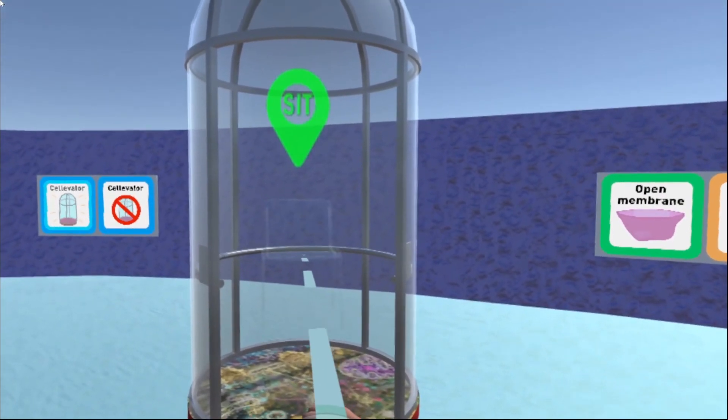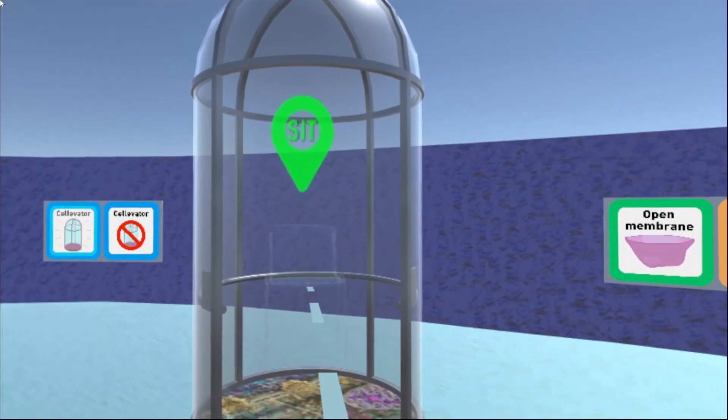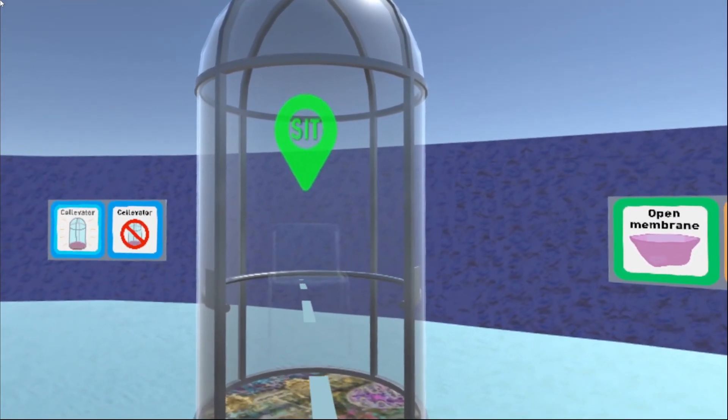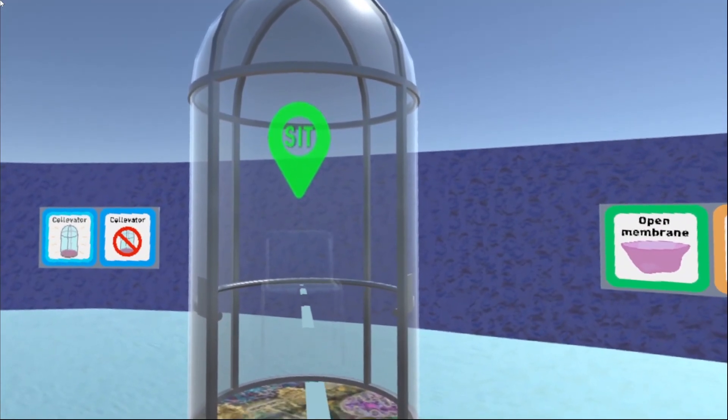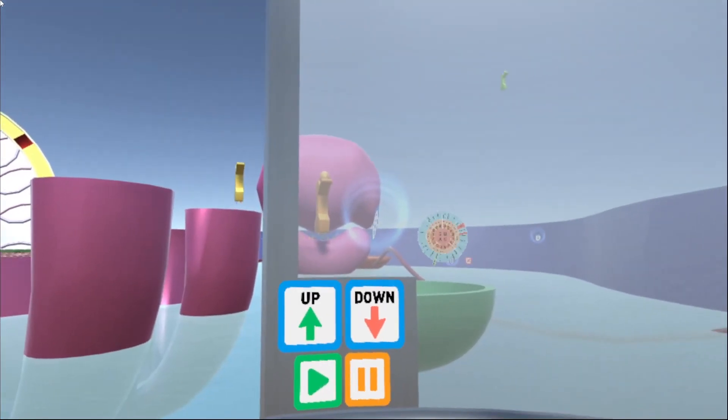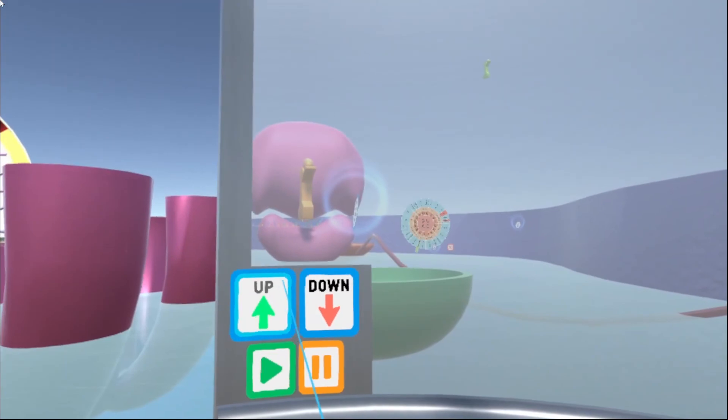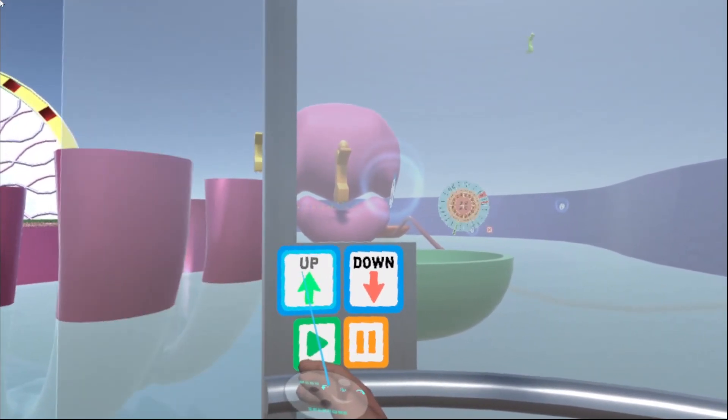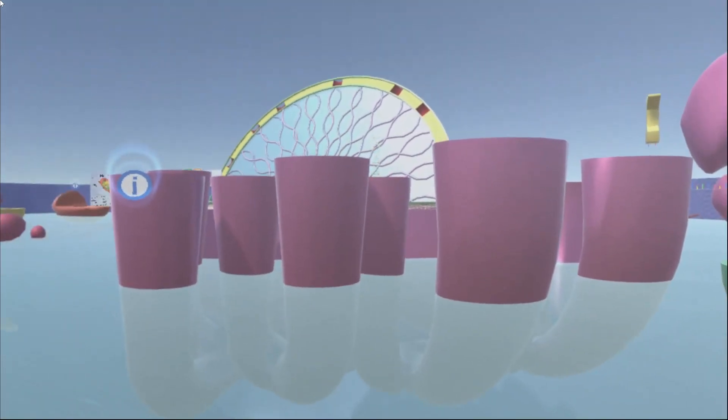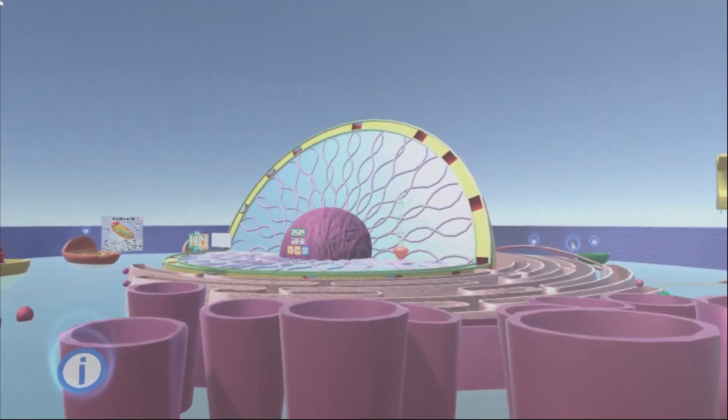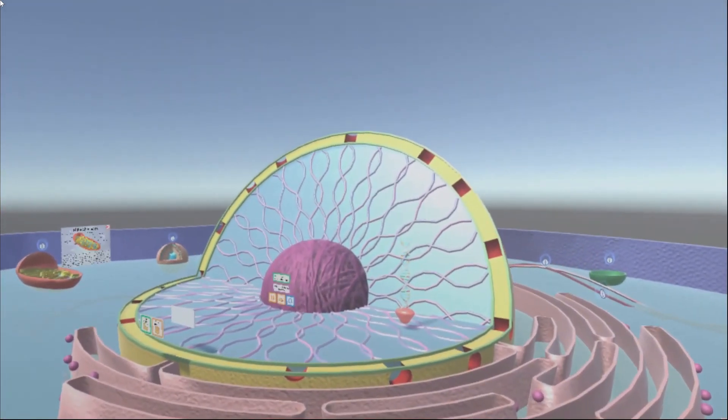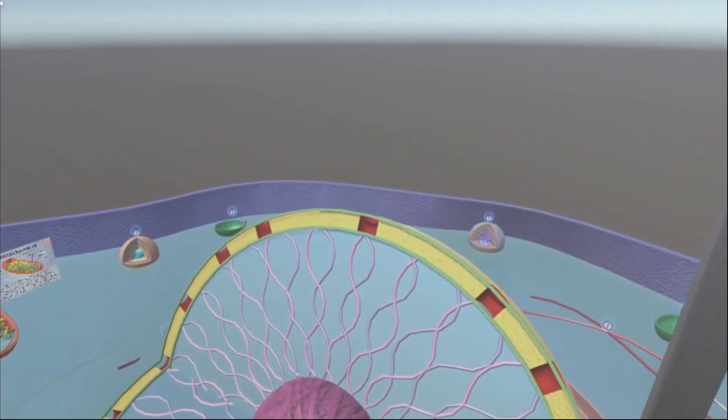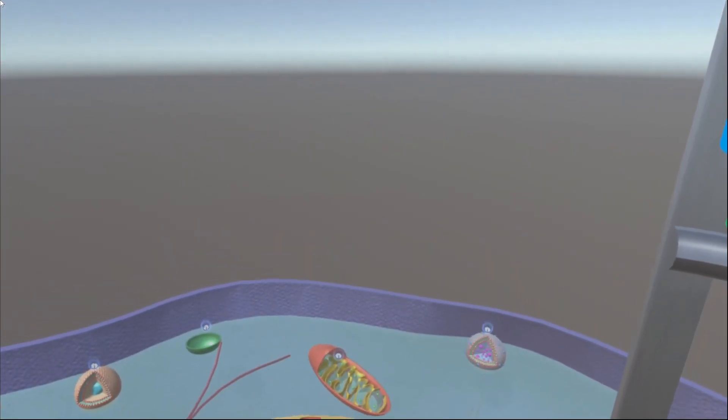So I will teleport us inside of our cellovator right here. You'll see there's a little invisible chair that will help us stay in place as the elevator goes up. If we look over to our right, we'll see that we've got our controls for the cellovator. I'll go ahead and click this up button. The door will close and we will go up, up and away.